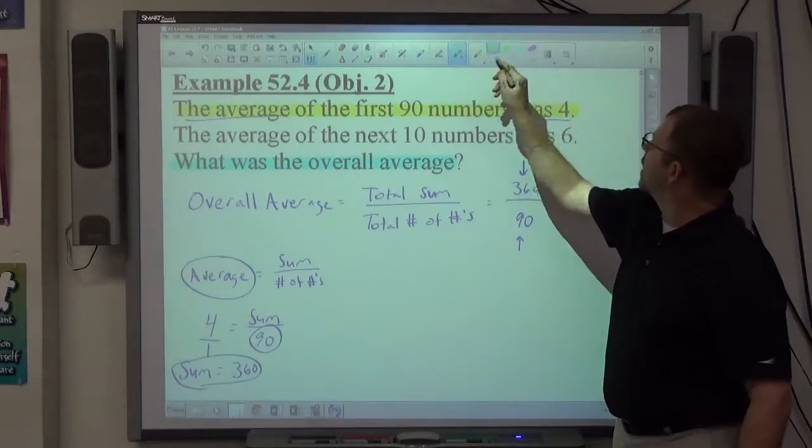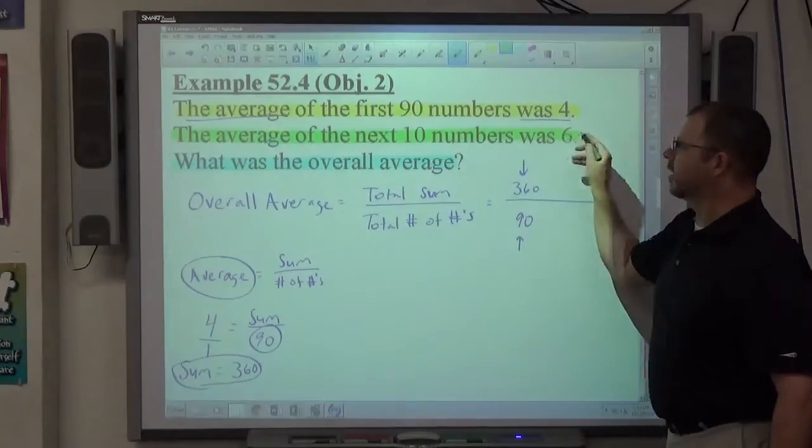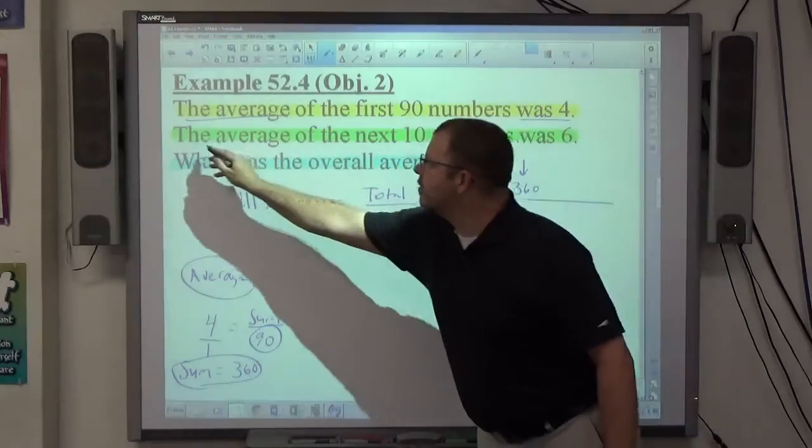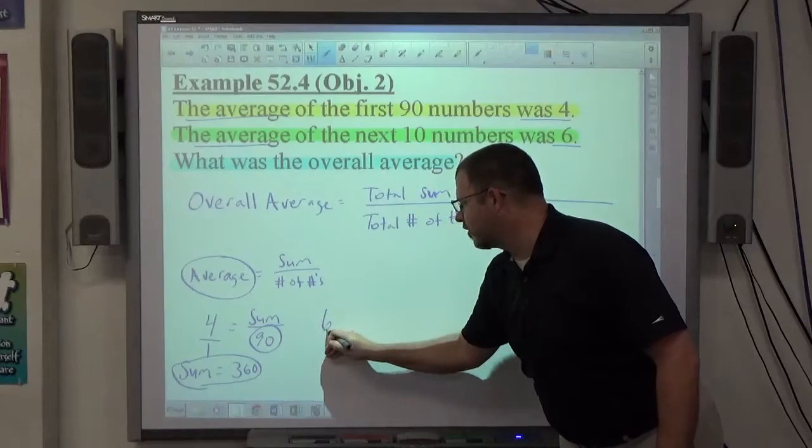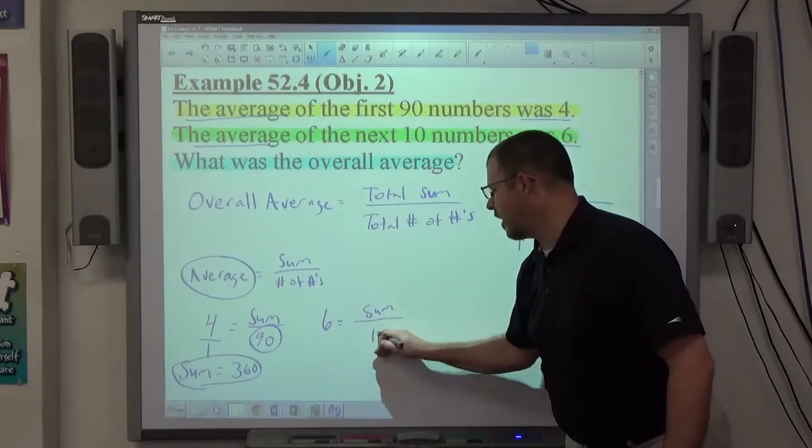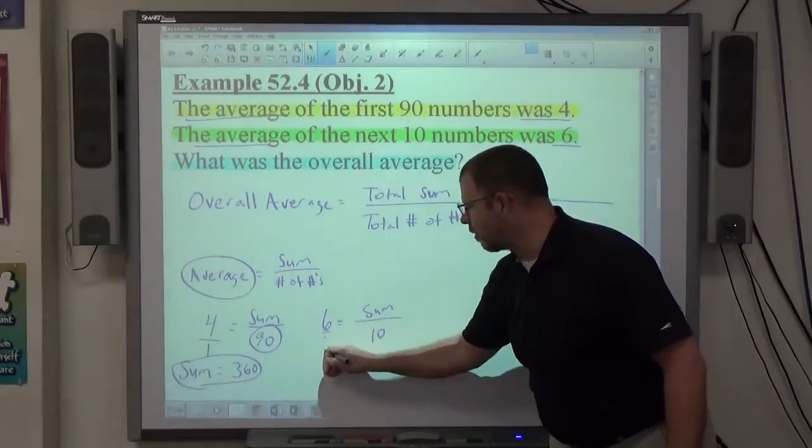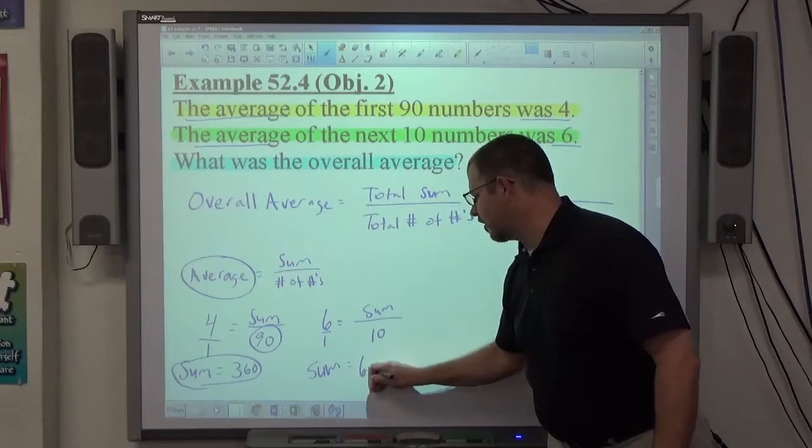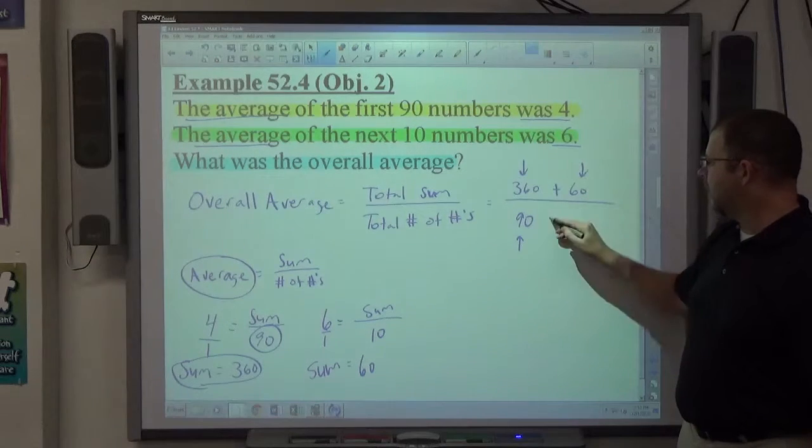If I look at the second statement about average, the average of the next 10 numbers was 6. Once again, here's my average rule. The average was 6, and there's 10 numbers. So average, which is 6, equals the sum of those numbers over 10. Again, if I put this over 1 and cross multiply, the sum of those numbers is going to be 6 times 10, which is 60. I get a sum of 60, and there were 10 numbers.